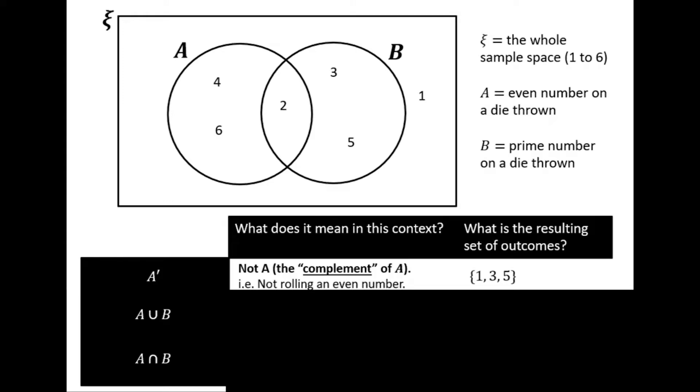Next we have A union B. What does it represent in context? It's anything that is an even number or a prime number, anything inside any of the circles.